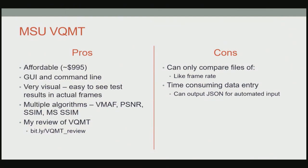What do I like about the Moscow State tool? It's affordable, it's GUI and command line, it's very visual, and it handles most major algorithms except Simplus — you can read my review at the provided link. On the con side, it can only compare files of like frame rate, so if I have a 60fps source and a 30fps output, I can't get a quality rating for that file — you can do that with Simplus. Also, with Hybrick I can download one CSV file and populate it into a spreadsheet, whereas with the Moscow State tool, analyzing 100 files means opening 100 CSV files and copying results manually.